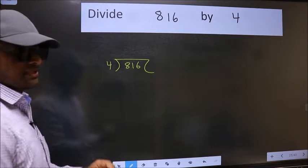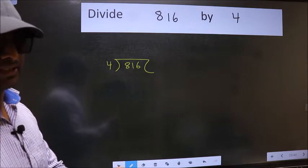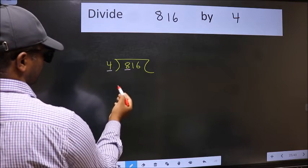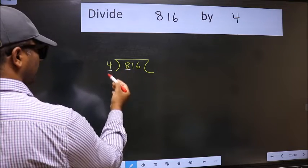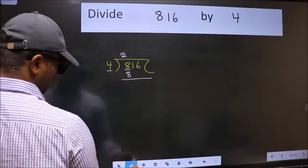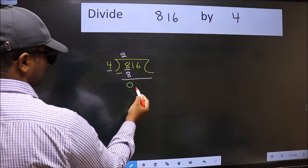This is your step 1. Next, here we have 8 and here 4. When do we get 8 in the 4 table? 4 times 2 is 8. Now we should subtract. We get 0.